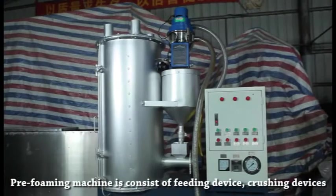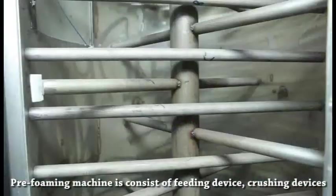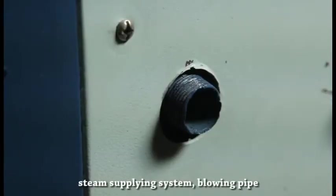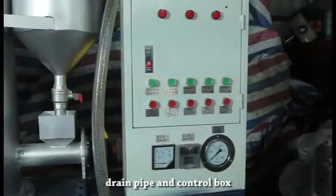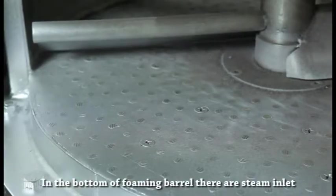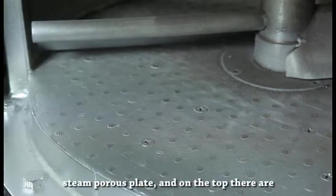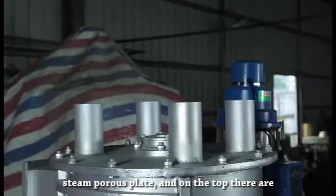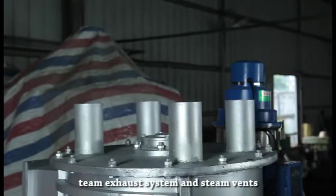The pre-foaming machine consists of feeding device, crushing device, steam supplying system, blowing pipe, drain pipe, and control box. In the bottom of the foaming barrel there are steam inlet and steam porous plate, and on the top there are steam exhaust system and steam vents.